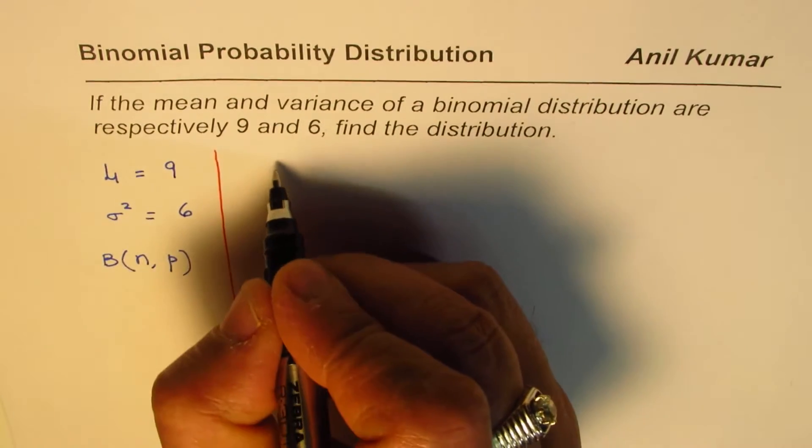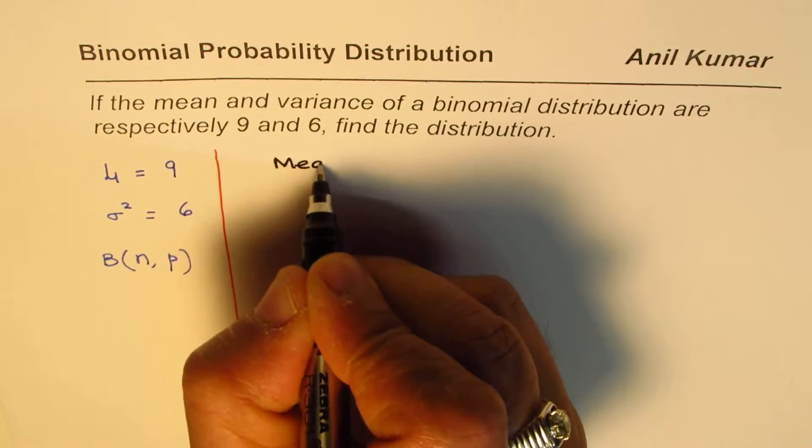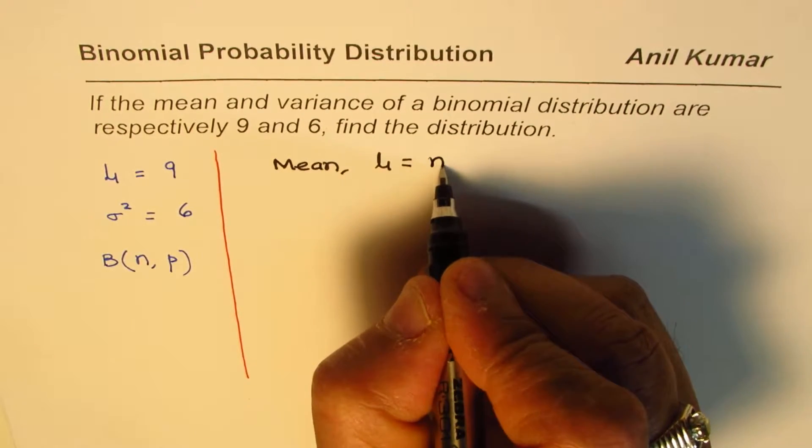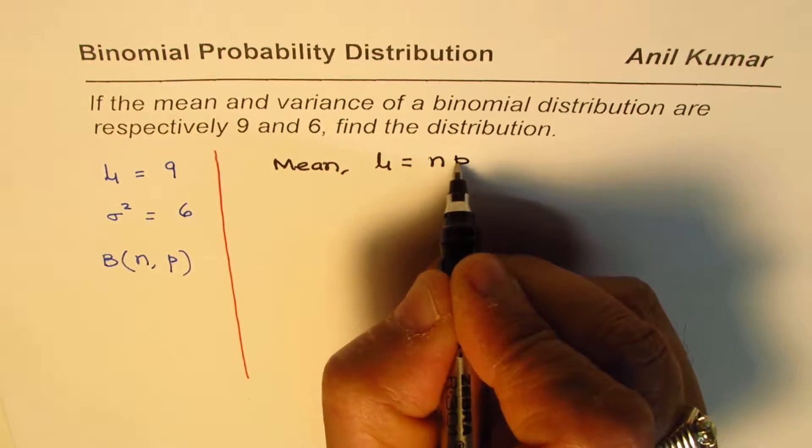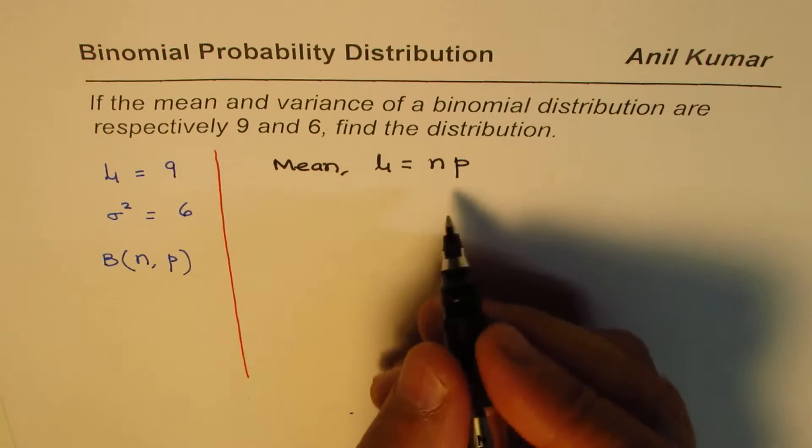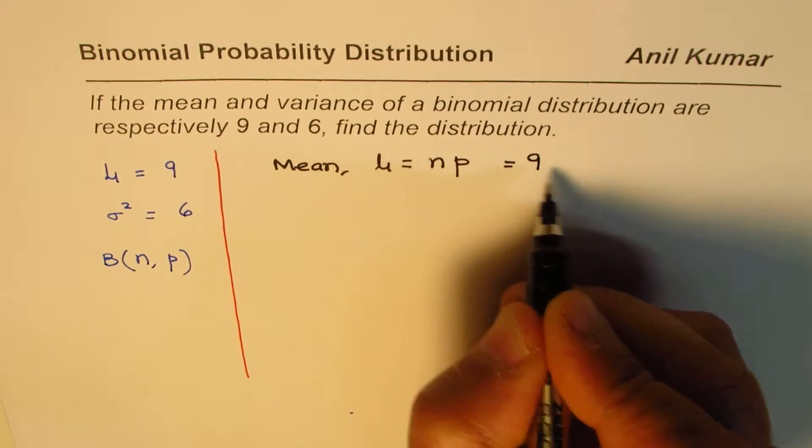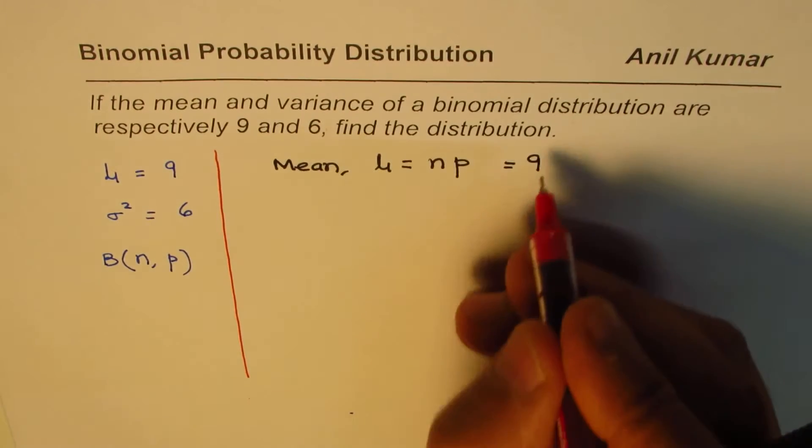What is mean? We know mean μ equals the number of trials times the probability of each success. That is mean, and we are given that mean value as equal to 9, so that becomes our equation number one.